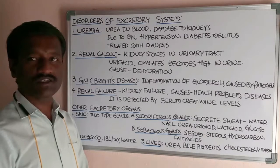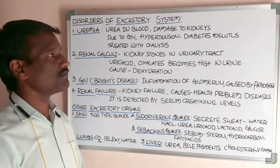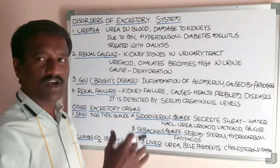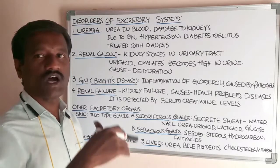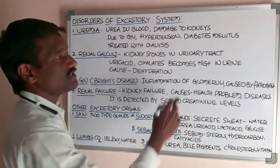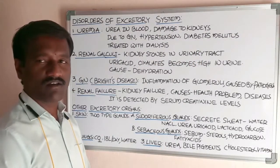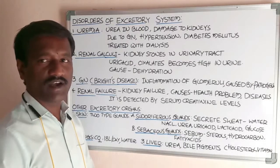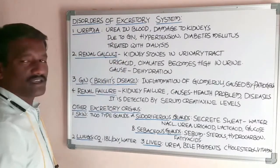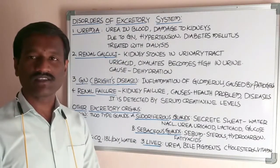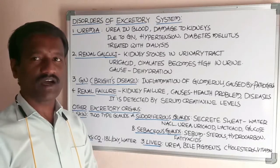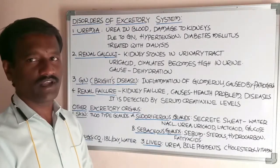Other causes for the disorder uremia include hypertension, which means high blood pressure elevated through the blood vessels in the body, and diabetes mellitus — not diabetes insipidus. Diabetes mellitus can cause uremia. Uremia is treated with dialysis, specifically hemodialysis by the artificial kidney.